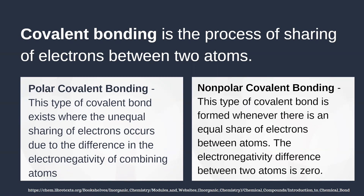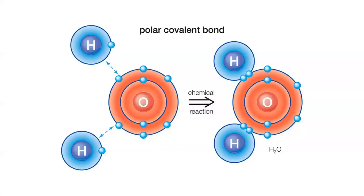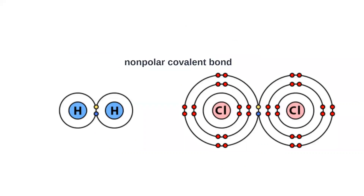Also, we have the nonpolar covalent bond. This type of covalent bond is formed whenever there is an equal sharing of electrons between atoms. The electronegativity difference between the two atoms is 0. It occurs wherever the combining atoms have similar electron affinity. As shown, this is an example of a polar covalent bond, and this is an example of a nonpolar covalent bond.